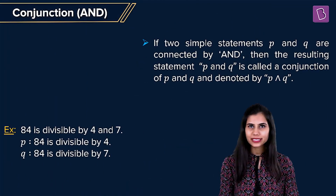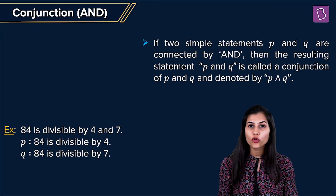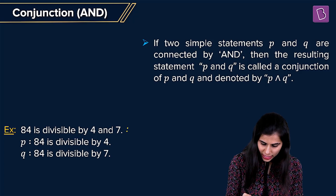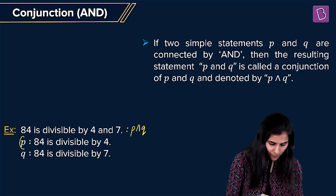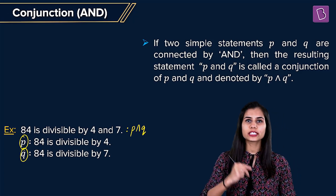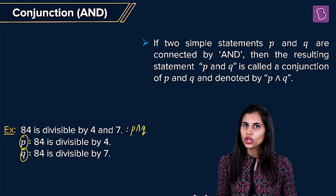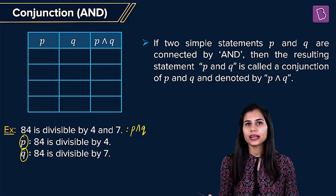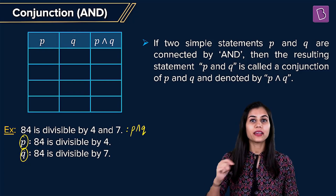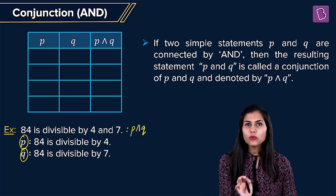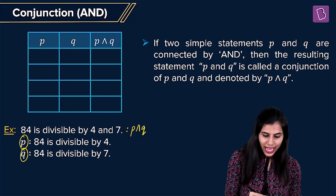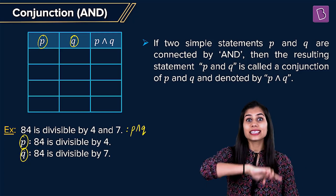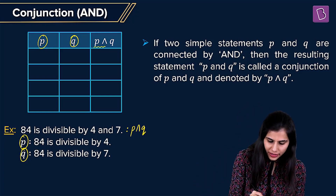Here we have the same example: '84 is divisible by 4 and 7.' We have just learned that this compound statement is the conjunction of P and Q, where P and Q are individually its two respective sub-statements. I have a table with three columns — the first two occupied by P and Q, and the last one by their conjunction P ∧ Q. We want to find out how the truth and falsity of these two component statements impacts the truth and falsity of their conjunction.